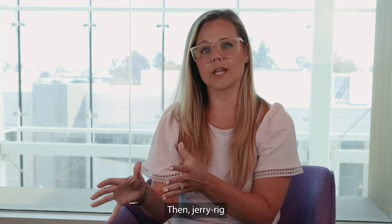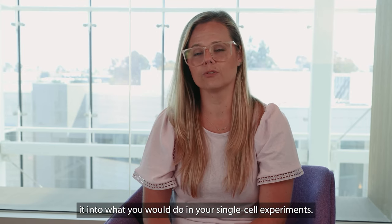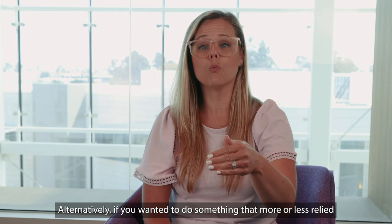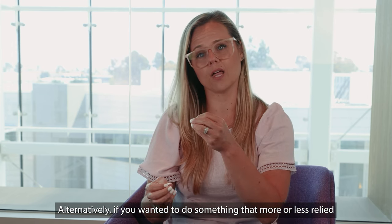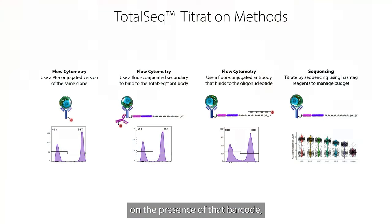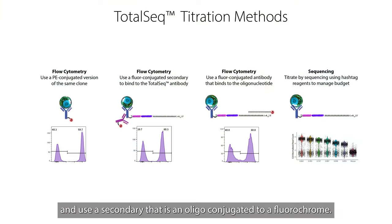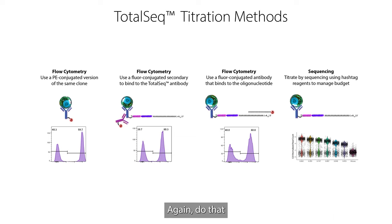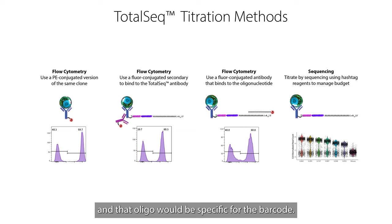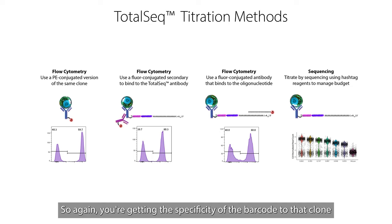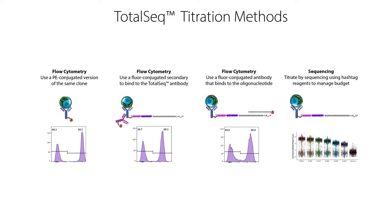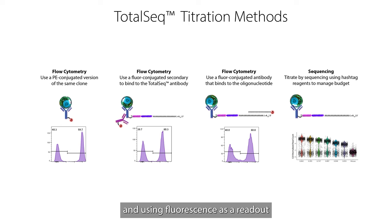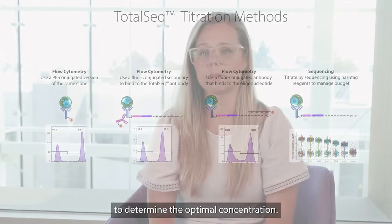You then take that optimal concentration and apply it to your single cell experiments. Alternatively, if you wanted to do something that more closely relied on the presence of the barcode, you can use a TotalSeq antibody with a secondary that is an oligo conjugated to a fluorochrome, and again do that same sort of application test by flow. That oligo would be specific for the barcode, so you're getting the specificity of the barcode to that clone and using fluorescence as a readout to determine the optimal concentration.